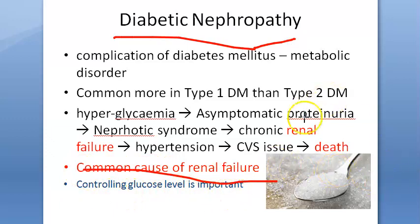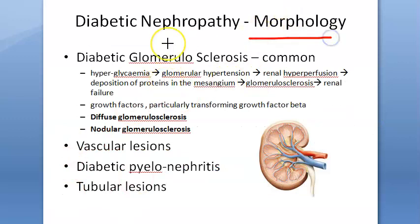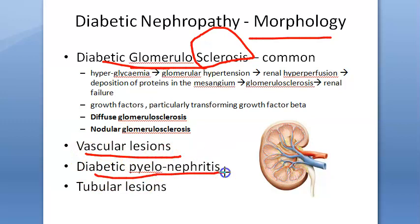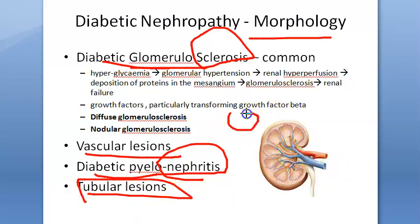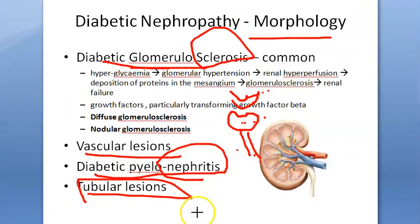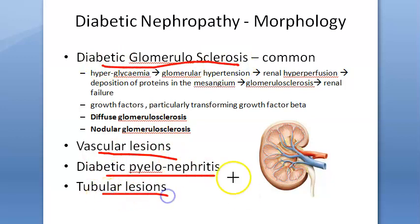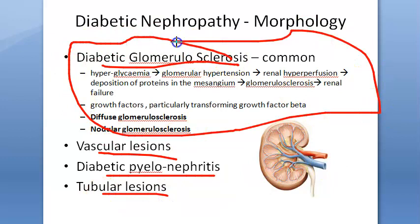Now looking at the morphology — what you will see in the kidney and glomerulus in diabetic nephropathy. There are four headings to explain: diabetic glomerulosclerosis, vascular lesions, diabetic pyelonephritis (inflammation of the nephron), and tubular lesions. These affect the glomerulus, tubule, and vasculature respectively.